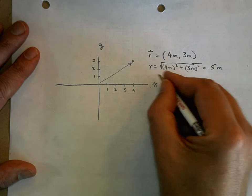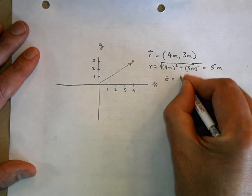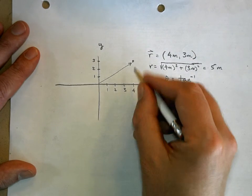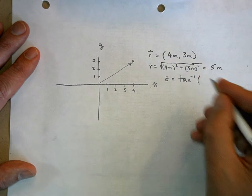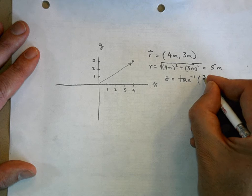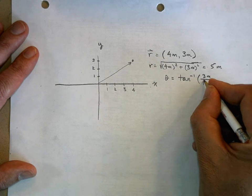And we can calculate the angle theta equals the inverse tangent of the y value, which is 3 meters over the x value, which is 4 meters.